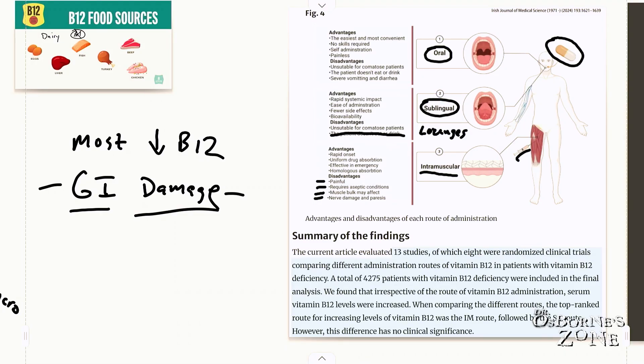We found that irrespective of the route of vitamin B12 administration, serum vitamin B12 levels were increased. When comparing the different routes, the top ranked route for increasing levels of B12 was intramuscular route followed by the sublingual route. However, this difference has no clinical significance. In other words, they found a slight win with intramuscular, but it wasn't clinically significant.